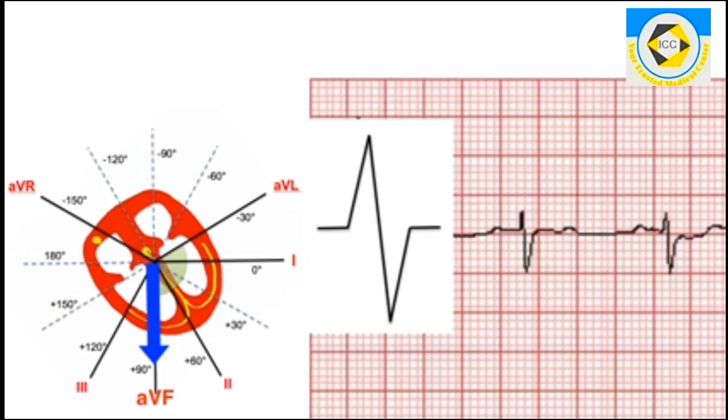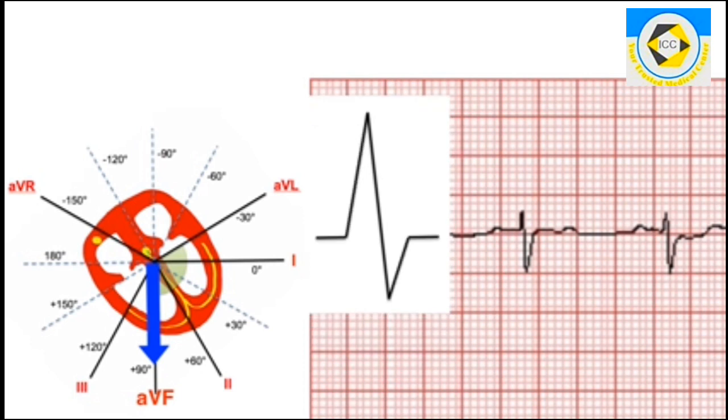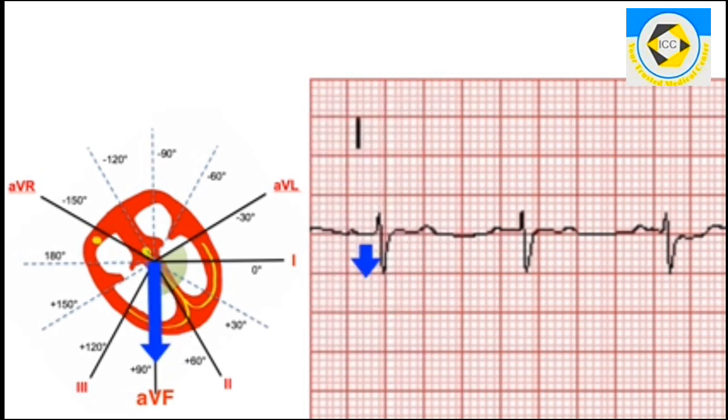Next look at the lead that runs nearest to this line. If QRS is positive in that lead, axis points towards the same direction of the lead. And if it is negative, axis points towards the opposite direction.